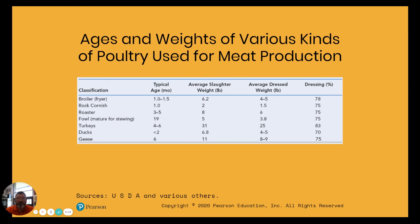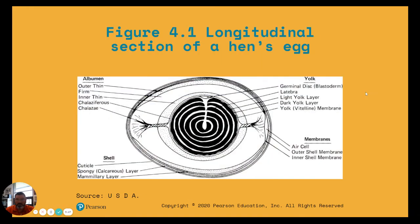When we talk about eggs and weights — broilers, roasters, and things of that nature — there's a grid to help separate those out, including the typical dressing percentages of each. Those have risen drastically over time, so we're getting more efficient at growing our poultry.